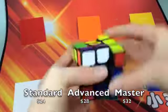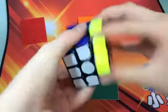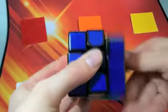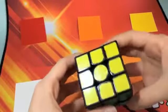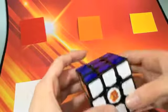The standard is a price of $24, Advanced is $28 and Master $32 on speedcube.com.au. I personally got the Advanced version. The Gans 357 was much cheaper at just $16.50.